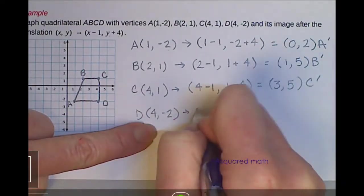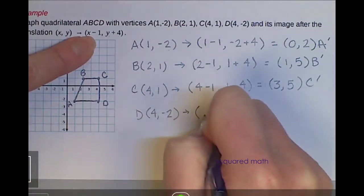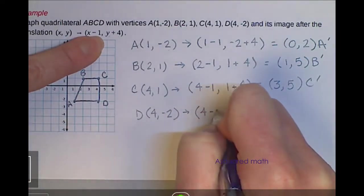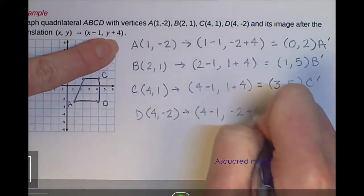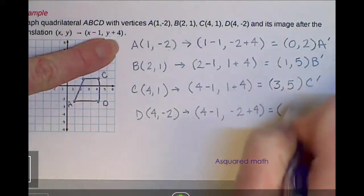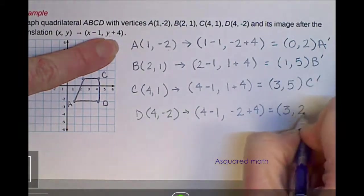And lastly for D prime, take that x value, which is 4, subtract 1, take that y value, which is -2, add 4, and you'll get your prime point of (3,2).